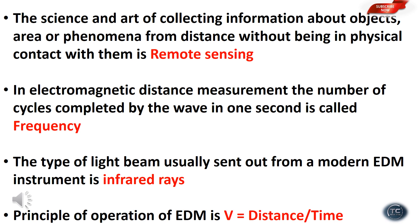The type of light beam usually sent out from a modern EDM instrument is infrared rays. The principle of operation of EDM is V equals distance divided by time — velocity equals distance by time.